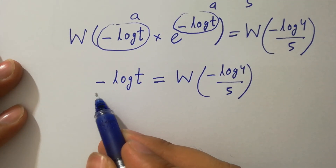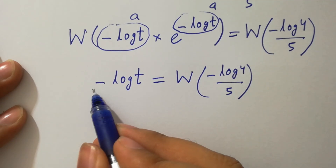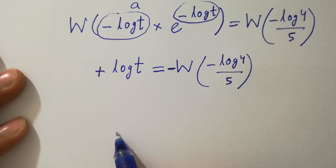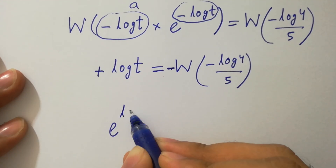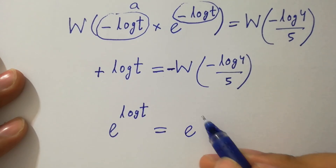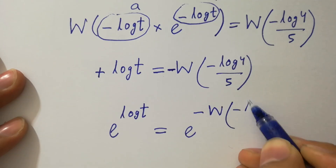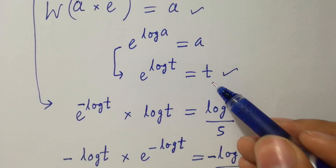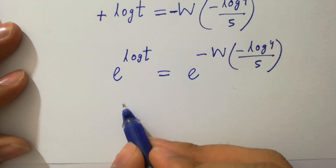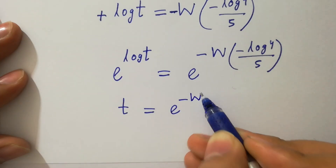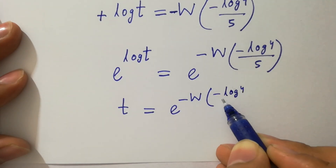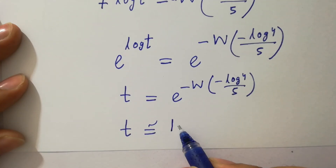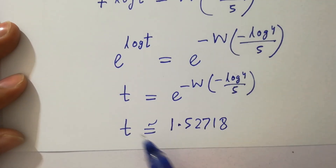To get rid of the minus, take minus on both sides: log t equals minus W of minus log 4 over 5. Taking e on both sides, and using e to the power log t equals t, we get t equals e to the power minus W of minus log 4 over 5, which is approximately equal to 1.52718.